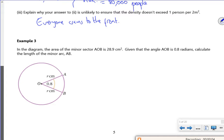Right, me again. Third video for the first lesson of the A2 star. It says in the diagram the area of the minor sector is 28.9.